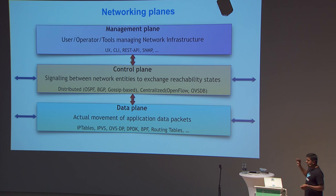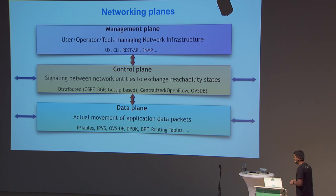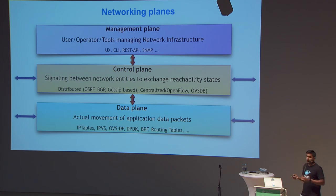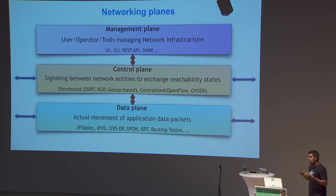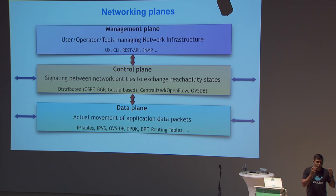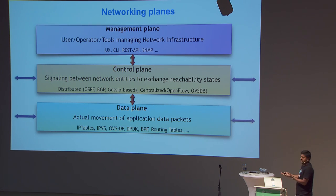I want to go bottom-up, especially after following Thomas Graf's presentation. Most of his talk was about the data plane, essentially. Data plane is about actually moving your packet from A to B. For any application that wants to talk to another application, the traffic going from a laptop to a server and back — that is the data plane. It's the actual movement of application traffic.